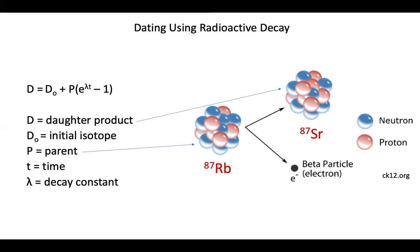Through measurements, we are able to find an amount of daughter and parent elements. But how do we find lambda and time? Lambda is given to us, but we still need to find time.